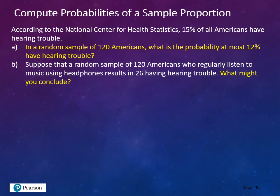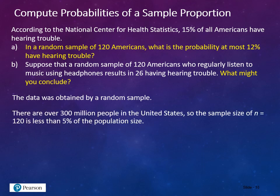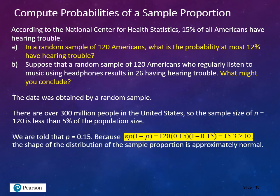According to the National Center for Health Statistics, 15% of all Americans have hearing trouble. In a random sample of 120 Americans, what is the probability of at most 12% having hearing trouble? For Part A: the data was obtained by random sample, and there are 300 million Americans, so 120 is well below the 5% threshold. Our calculation gives a value greater than or equal to 10 for n times p times (1 minus p), so the shape of the distribution is approximately normal.